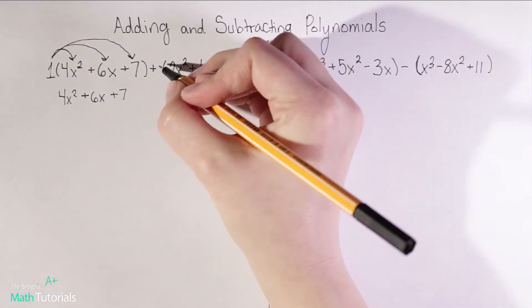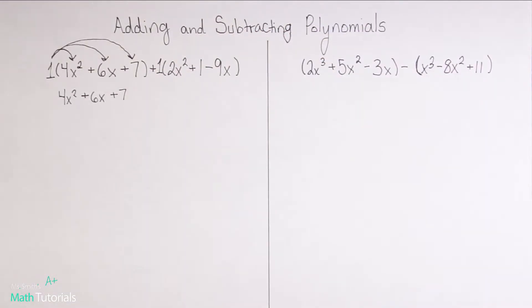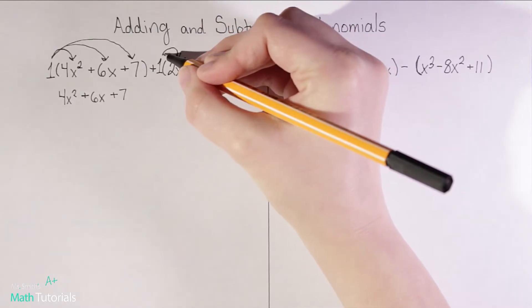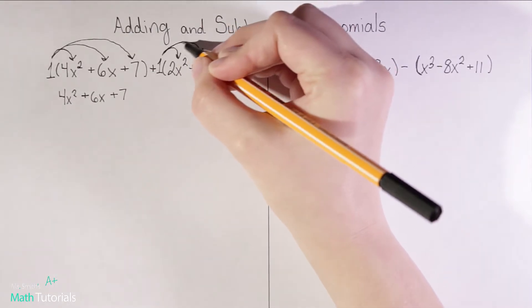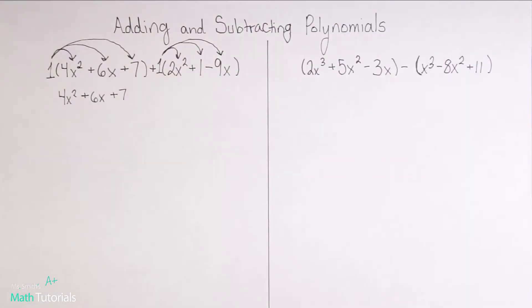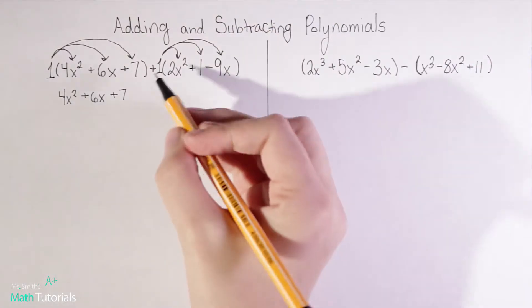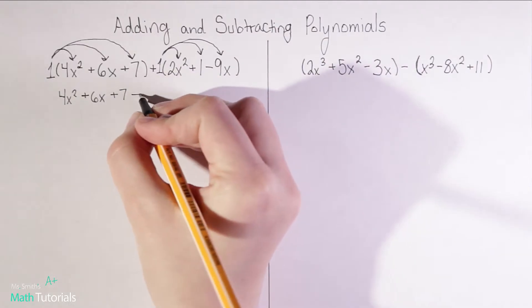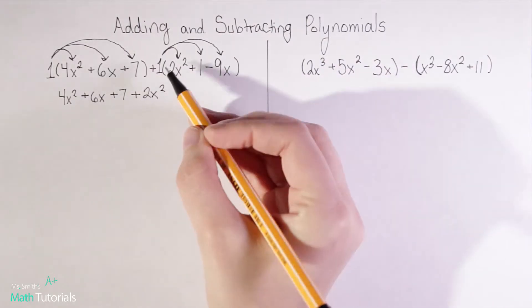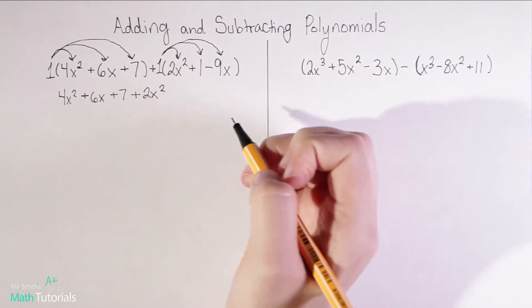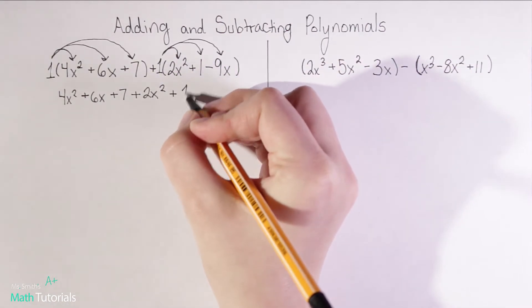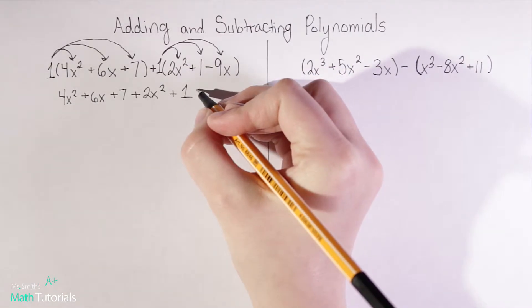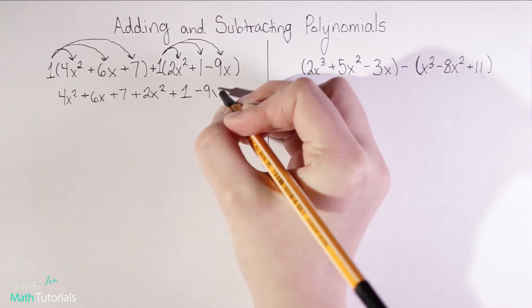There's an understood positive 1 in front of those parentheses that needs to be distributed to get rid of the outside parentheses. So we'll do the same thing again: positive 1 times positive 2x squared, positive 1 times 1 is positive 1, and positive 1 times negative 9x is negative 9x.